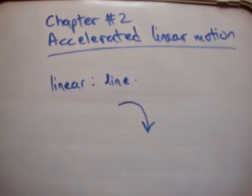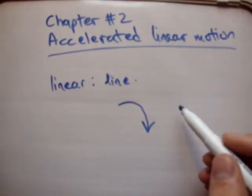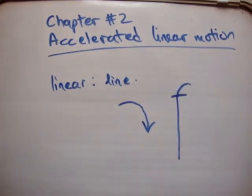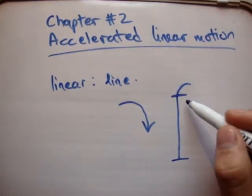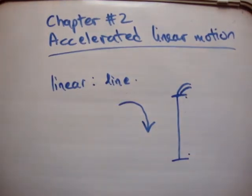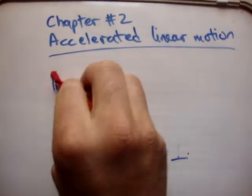For example, on a straight road and only on a straight road. If the road bends at all, you can only analyze the motion using linear motion from here to here. After that, you have to start using circular motion to analyze what's happening. So that's what linear means - it's happening in a line.